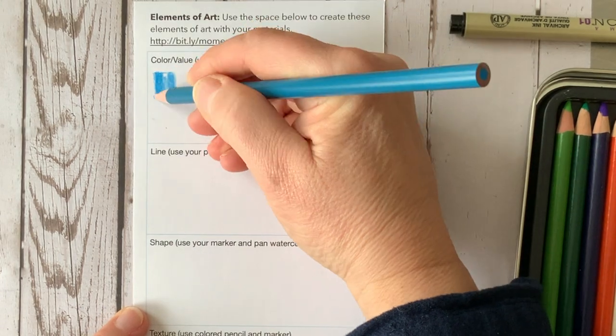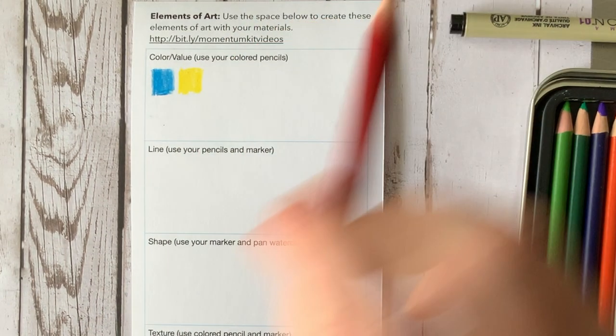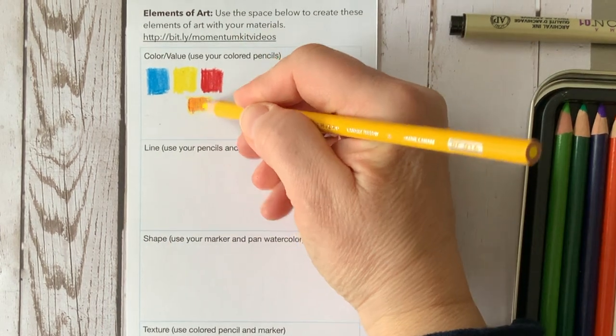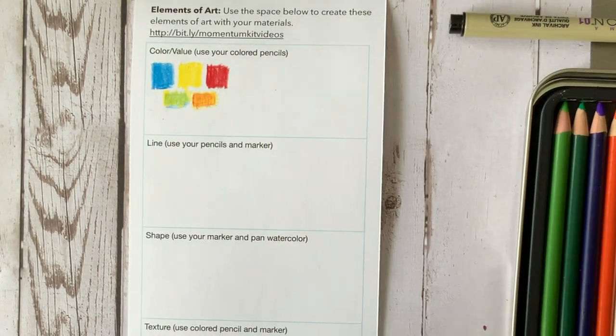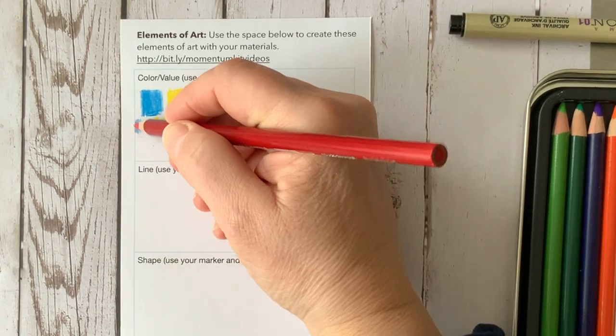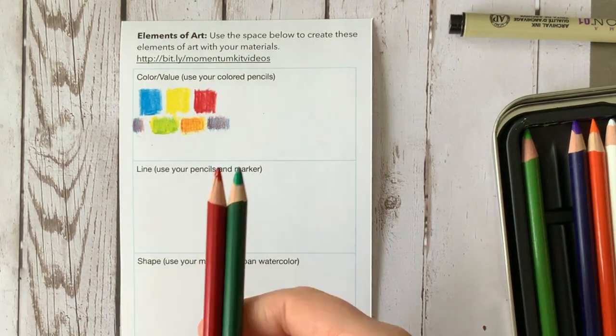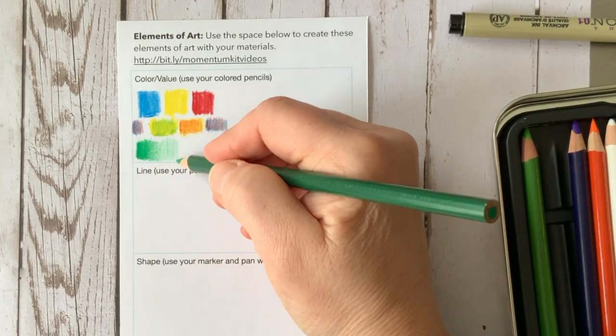First, let's start with color and value. You can use your colored pencils to place primary colors together and then using about 50% coverage, you can use your primary colors to make secondary colors such as green, orange, and violet.